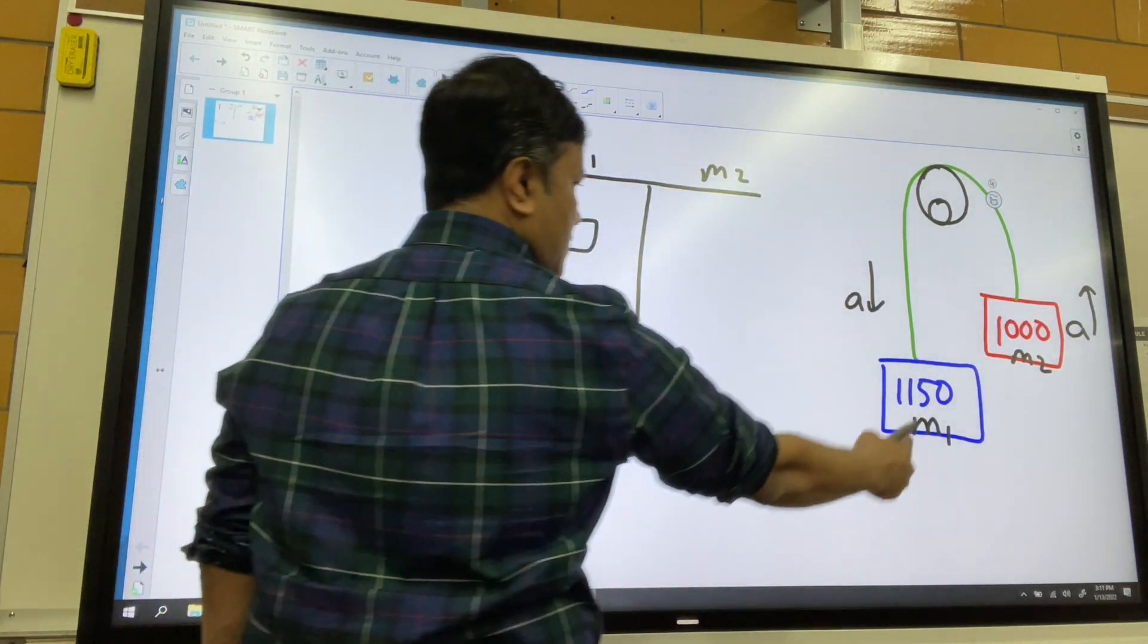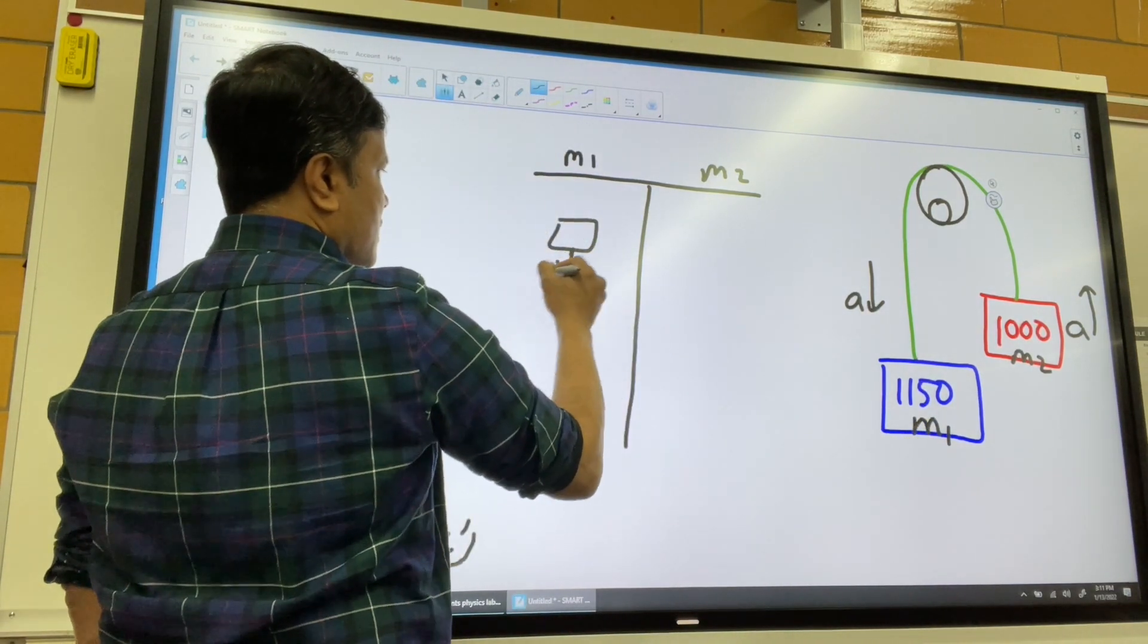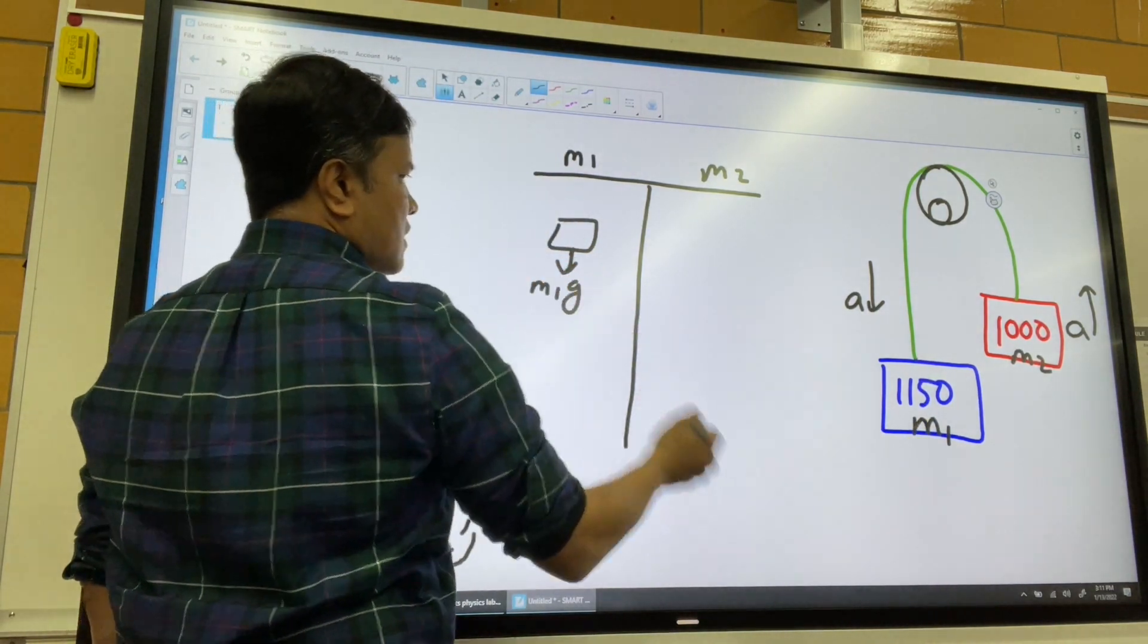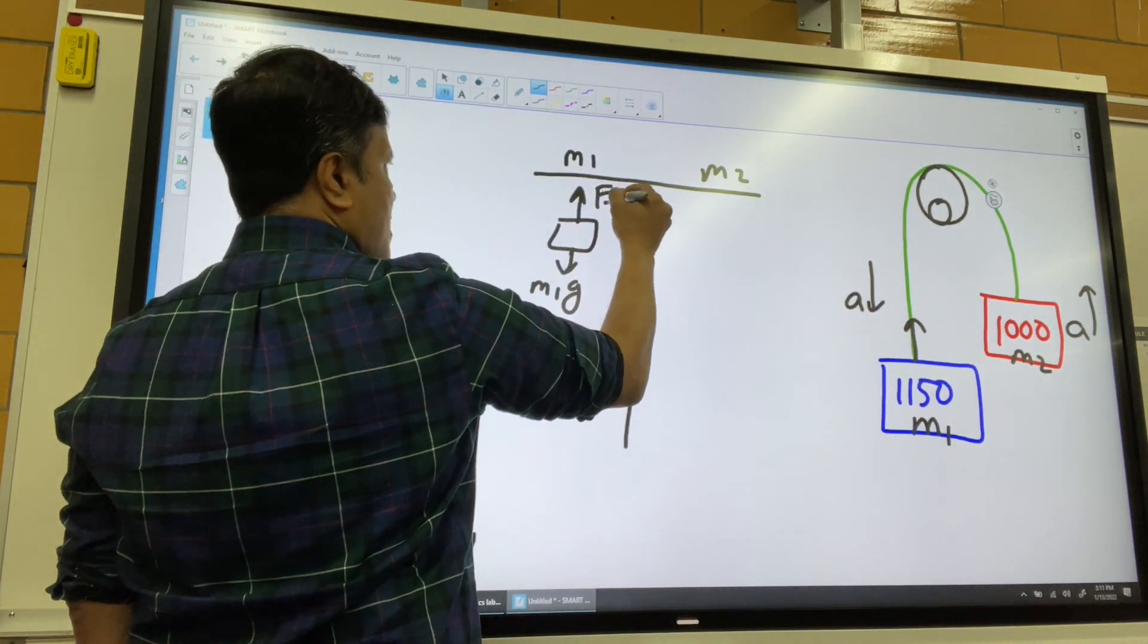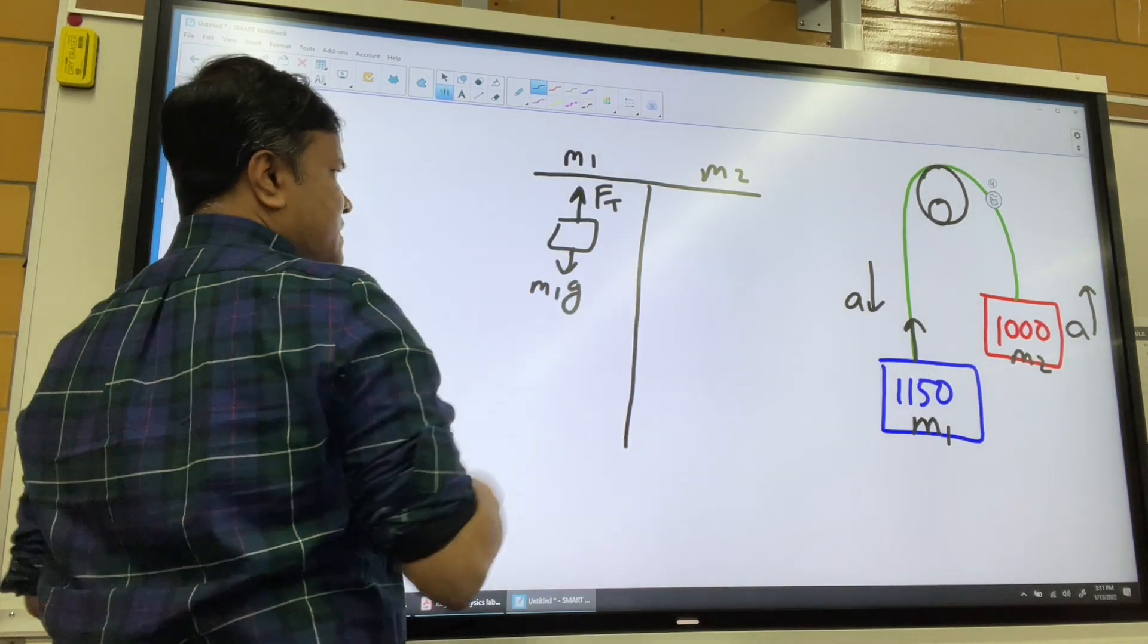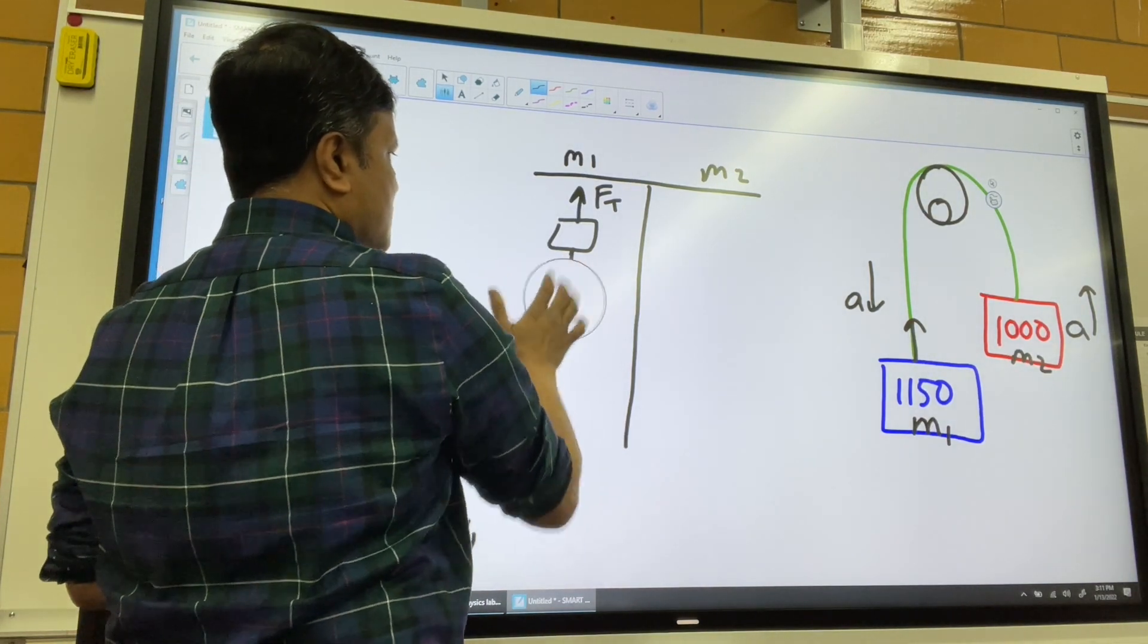Mass one. How many forces acting on this one? So M1G. And this is FT. M1G has to be bigger than FT because it is accelerating down. So make it obvious.